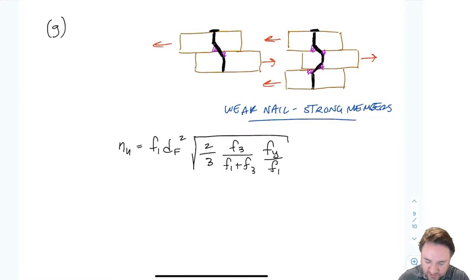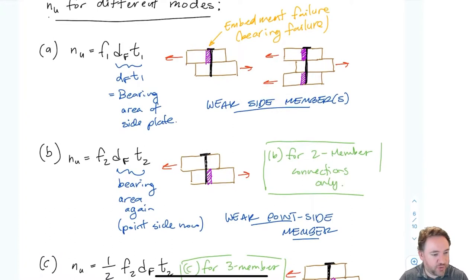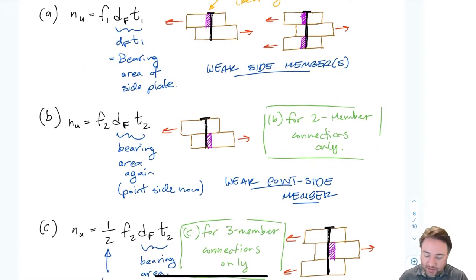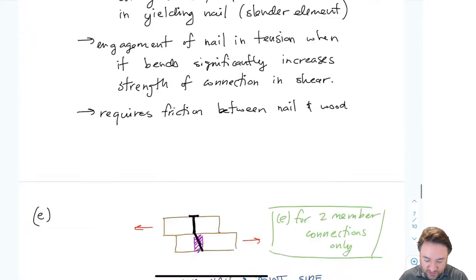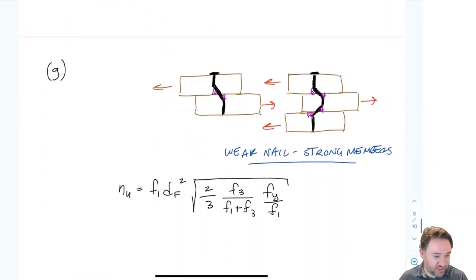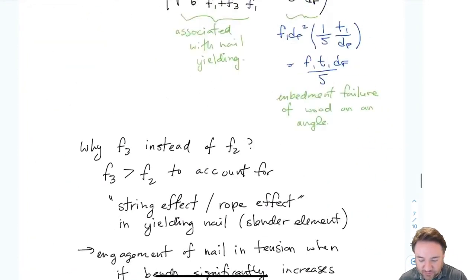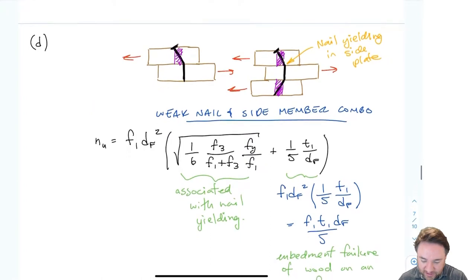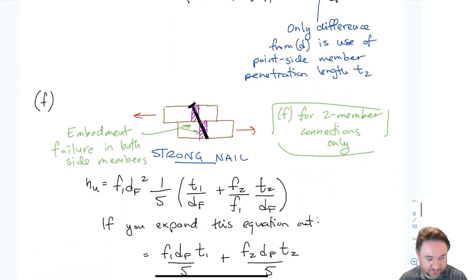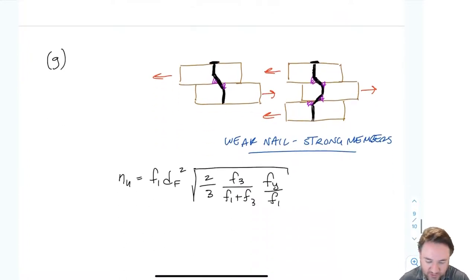Now that we have all seven equations, some of them are applicable to both two-member and three-member connections, and some only to two-member connections. If I have a two-member connection, I use A, B, D, E, F, and G — I skip C. For three-member connections I actually have fewer to calculate: I use A, C, D, and G — I skip B, E, and F. So I only have four failure modes to calculate for three-member connections.